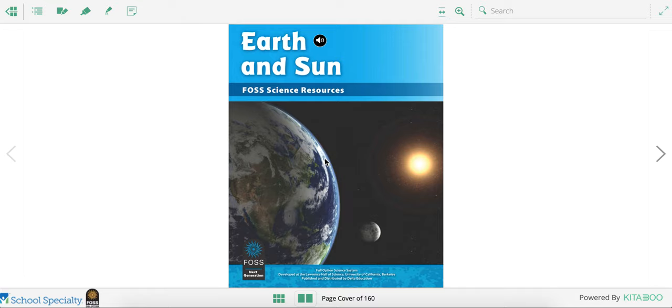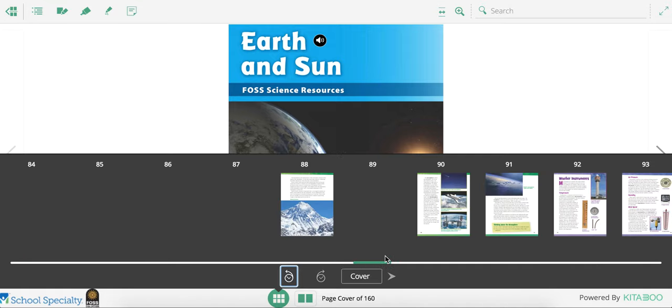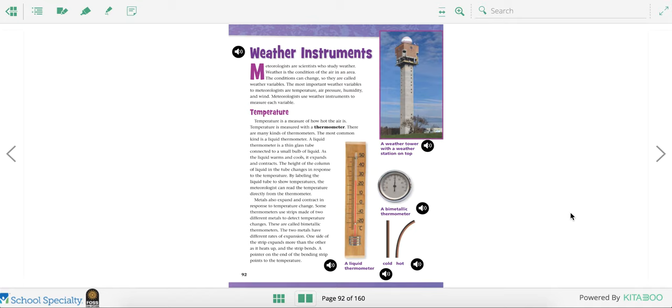Today during science we're going to continue reading our Earth and Sun FOSS science textbook. I'm going to use the page finder and turn to page 92. On page 92 we're going to learn about weather instruments.